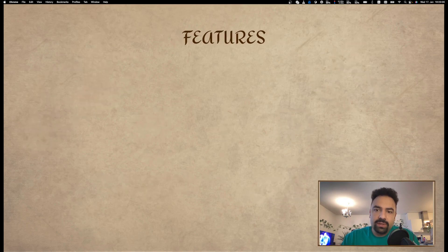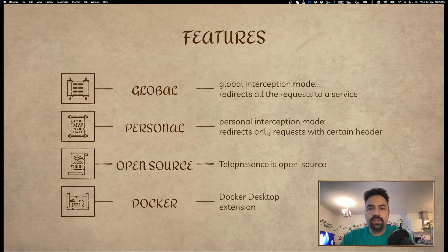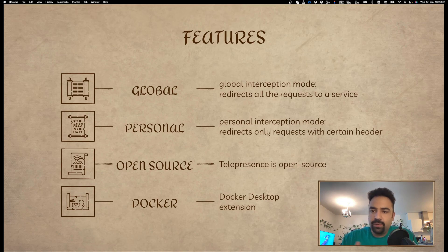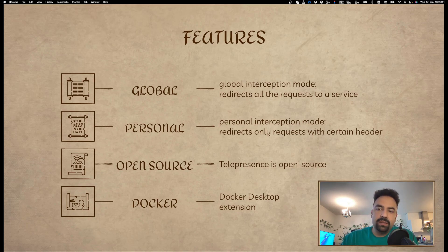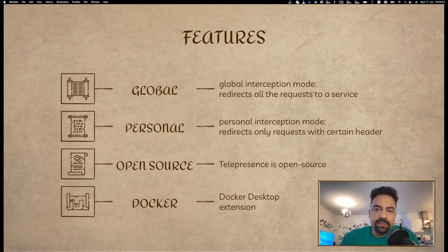There is a global interception mode which redirects all requests to one service in your Kubernetes cluster. There is also a personal interception mode that only redirects requests that have certain headers set. So if you're using a cluster with a shared staging environment with multiple people, all of them can have interception enabled but with different requests redirected to different machines — they can all use the same staging environment for testing. Telepresence is open source, so you don't need to worry about losing it in the future. It also has a Docker Desktop extension, so if you prefer clicking on things, you can use that.